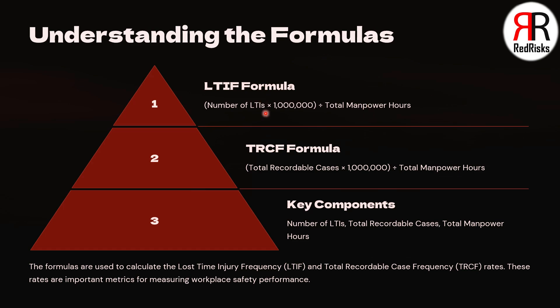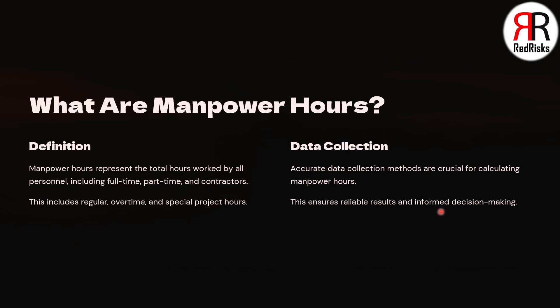In formula terms: Lost Time Injury Frequency equals the number of lost time injuries multiplied by 1,000,000, divided by the total manpower hours. Similarly, Total Recordable Case Frequency equals the number of recordable cases multiplied by 1,000,000, divided by the total manpower hours.